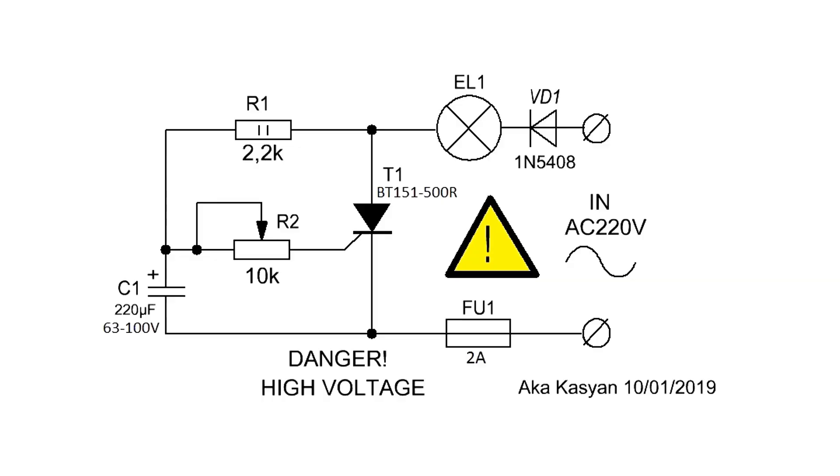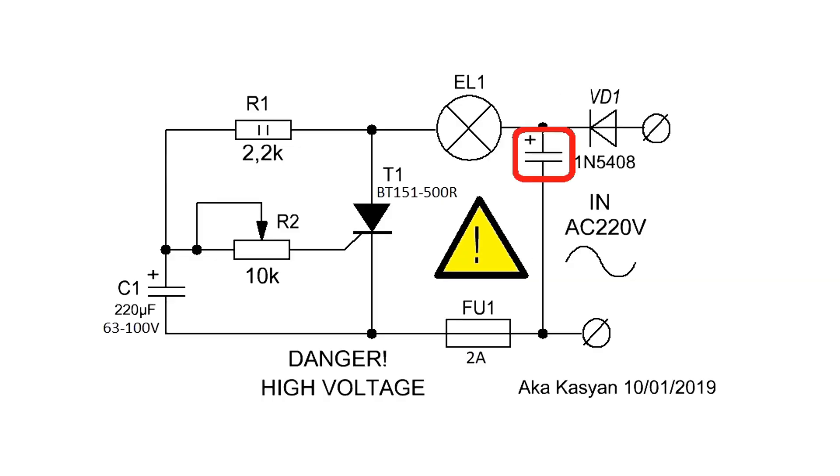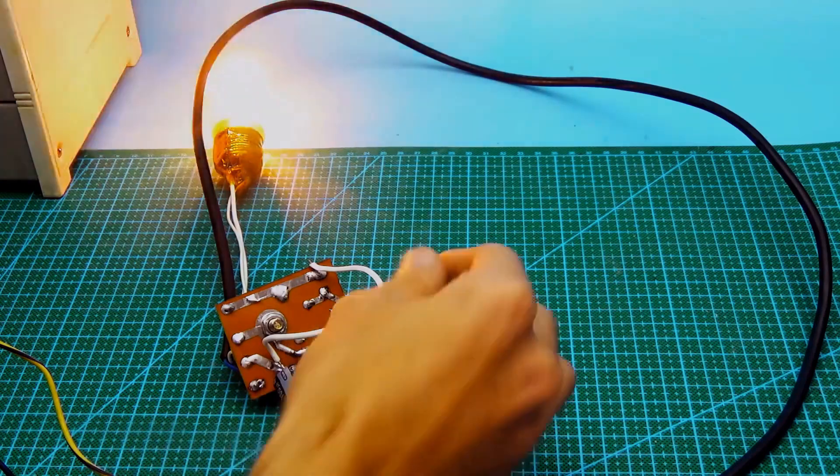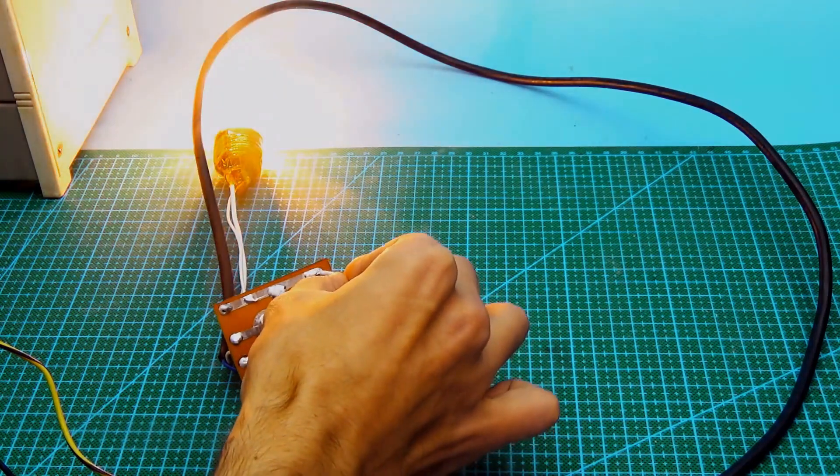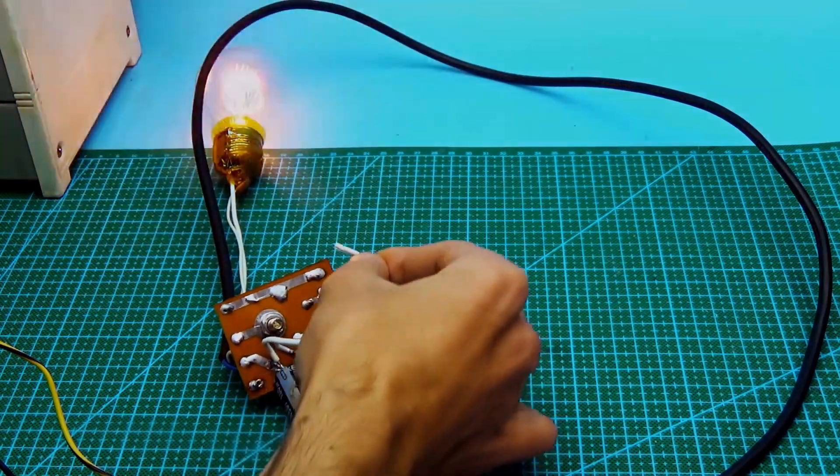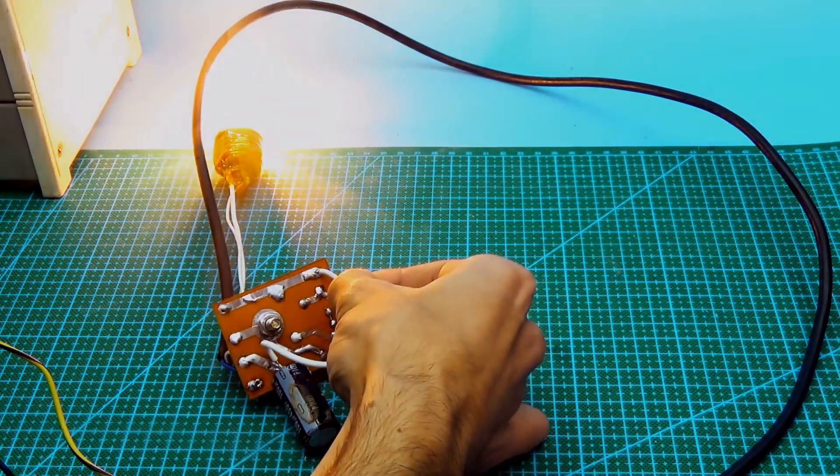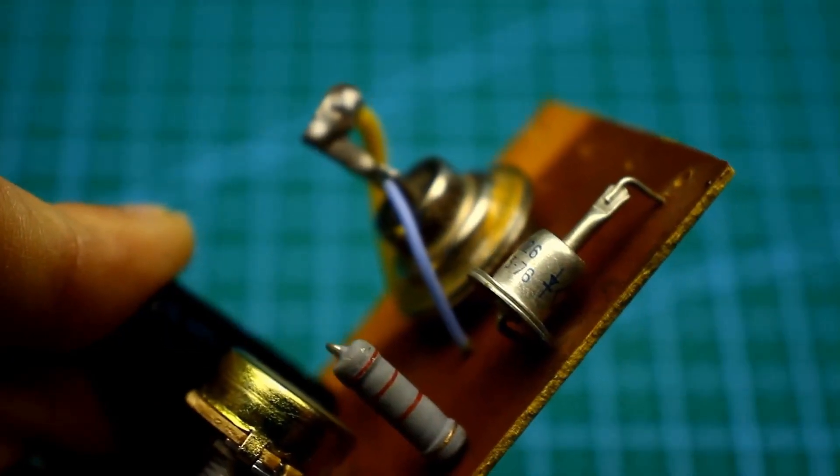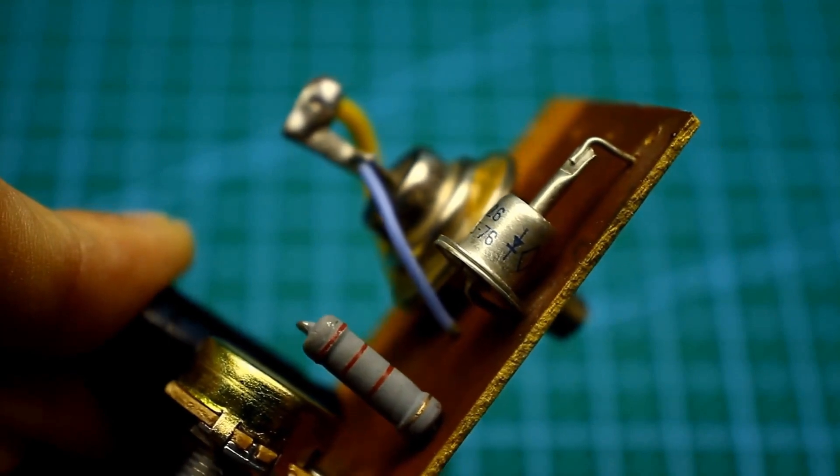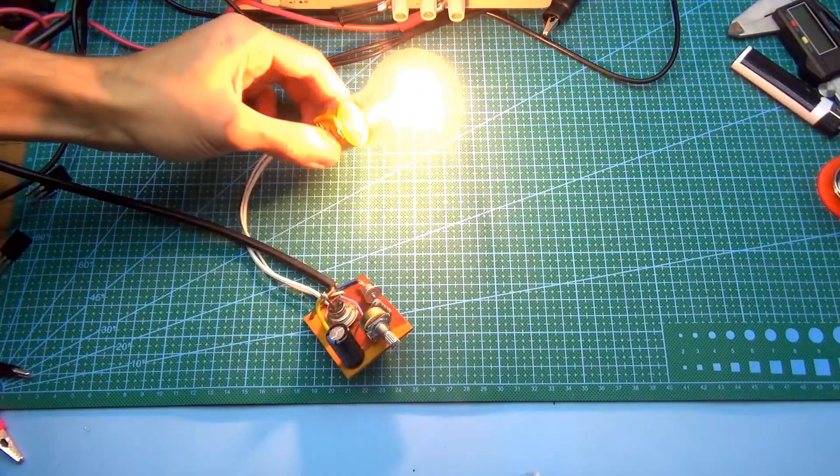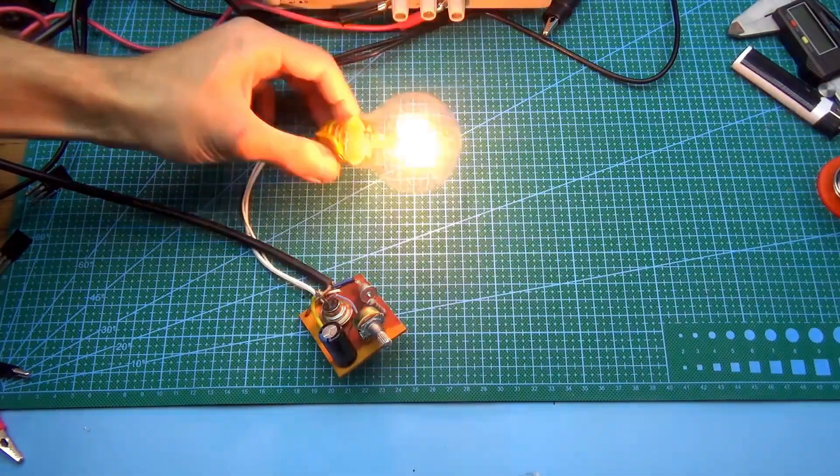This can be easily verified by adding an electrolytic capacitor of relatively large capacitance after the diode, which will smooth out the pulsations. A control pulse will be applied to the thyristor. It will open, but it won't be able to close. By the way, due to the use of a half-wave rectifier, our lamp will glow at half-brightness and consequently consume less power.